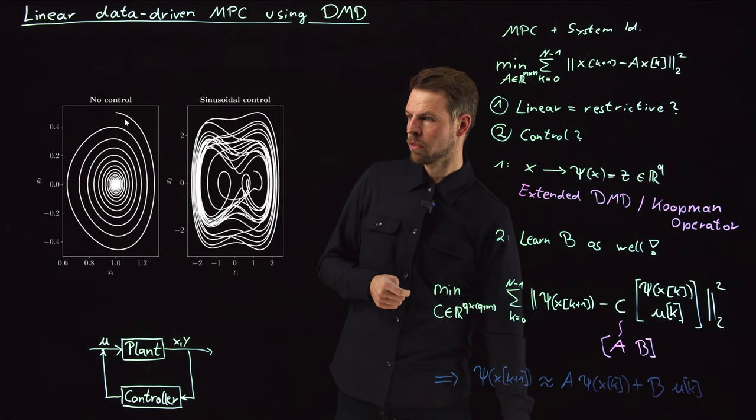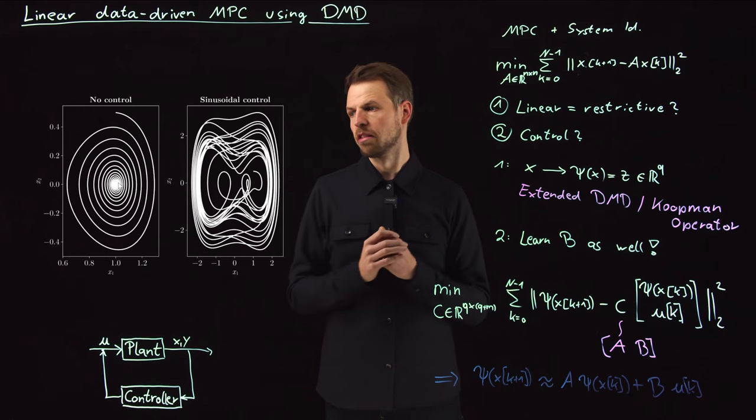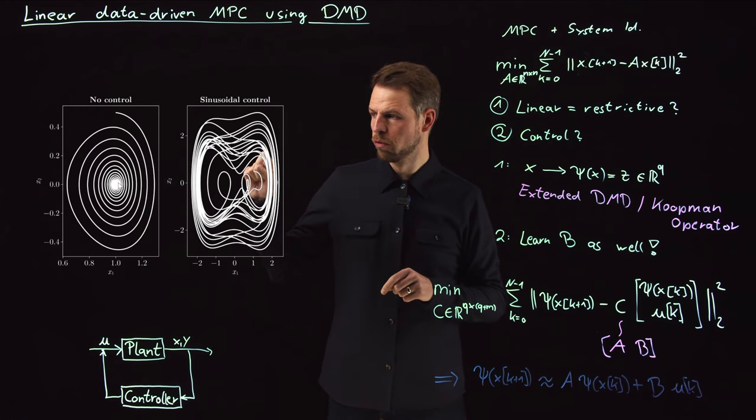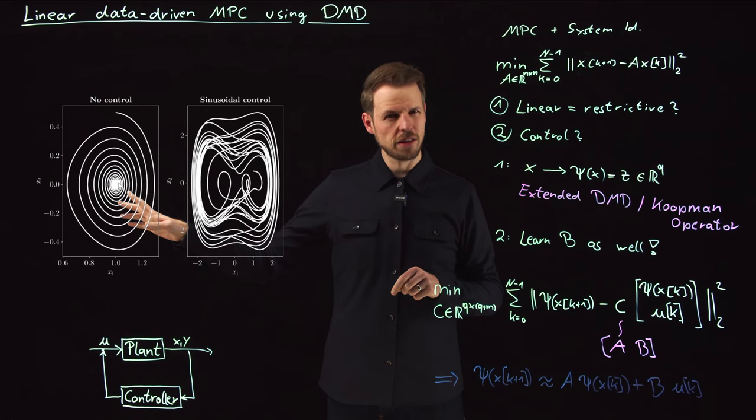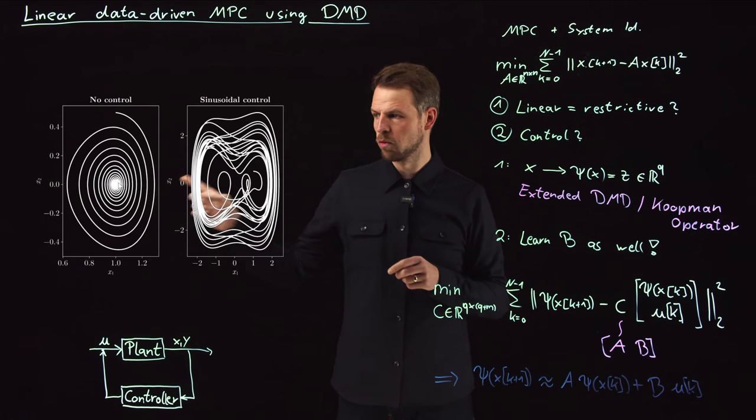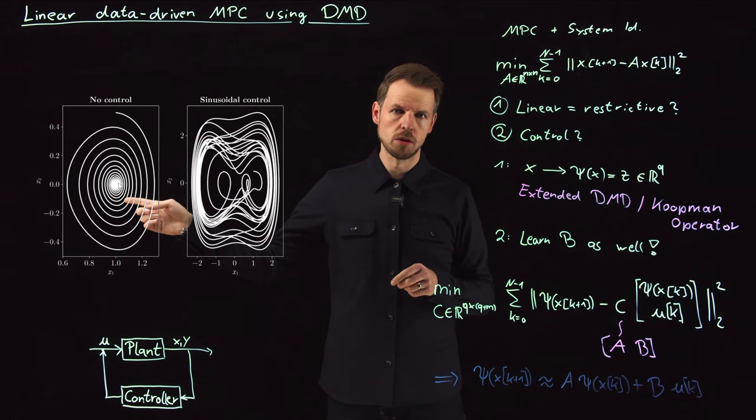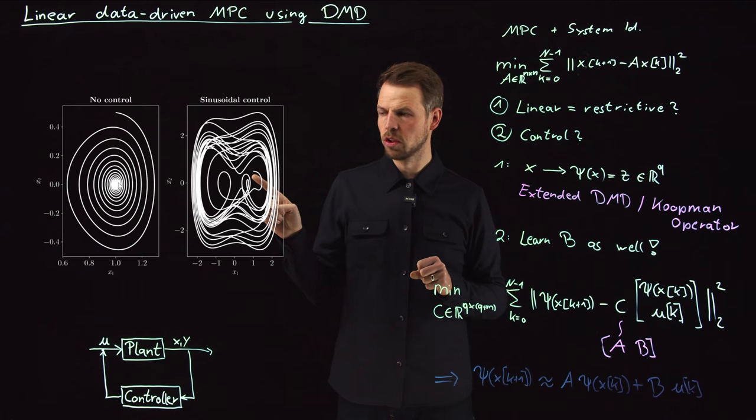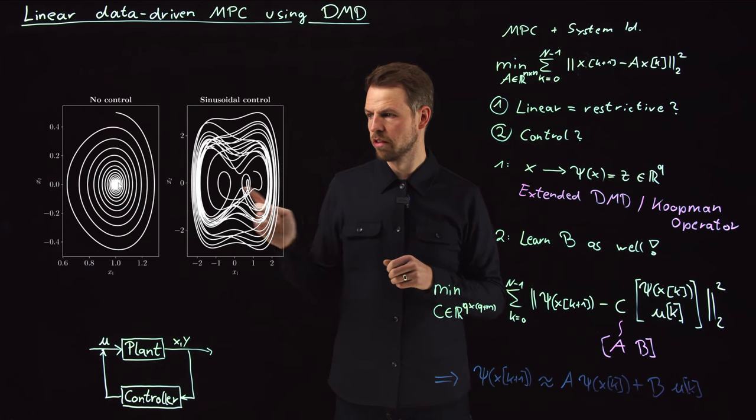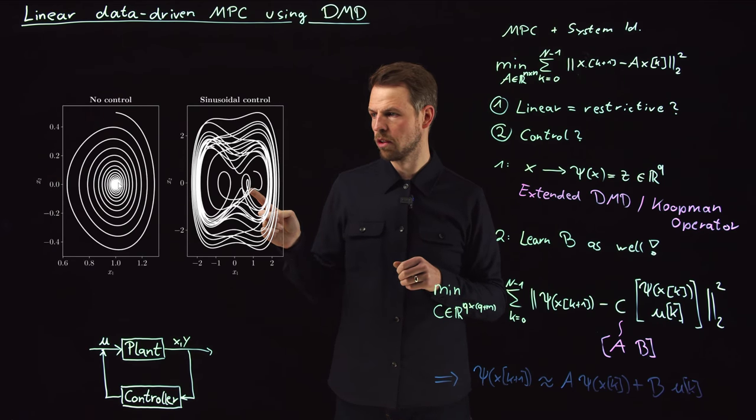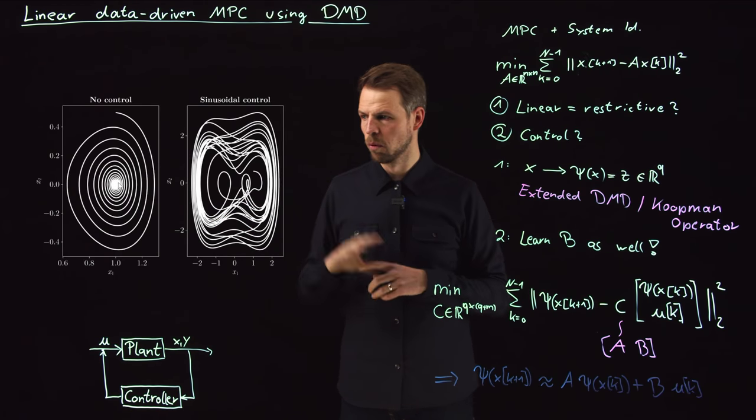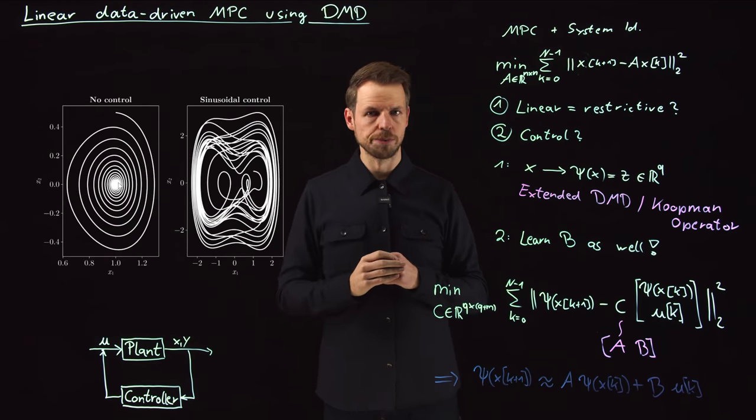So here we're starting here. You see that actually this point one zero is a stable fixed point for the parameters that we have seen. So you can move into this point. Actually the system has three fixed points. It has one at one zero, one at minus one zero, and one at zero zero, which is unstable. And in the right picture, you see the sinusoidal control. So you actually see these two fixed points at one zero and minus one zero, and it's wobbling around these with this sinusoidal control input.